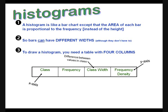The class width is the difference between the values at the end of each class. To calculate the frequency density, we divide the frequency by the class width.